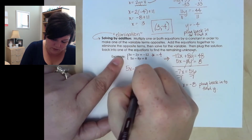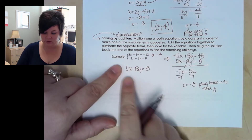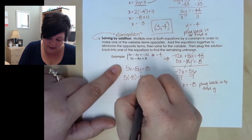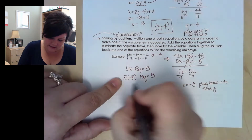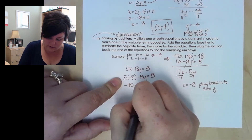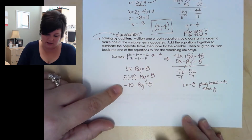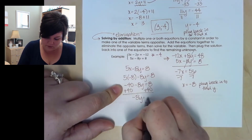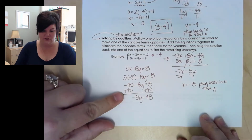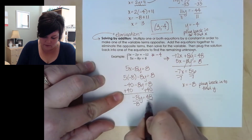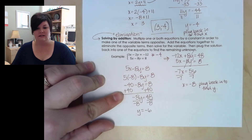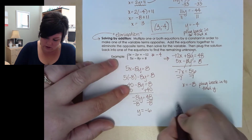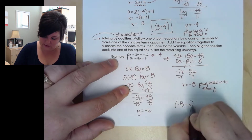Plugging back in to find y: using 5x minus 8y equals 8, I substitute x equals negative 8. So 5 times negative 8 minus 8y equals 8. That's negative 40 minus 8y equals 8. Adding 40 to both sides gives negative 8y equals 48. Dividing off negative 8 gives y equals negative 6. Writing as an ordered pair: (−8, −6).